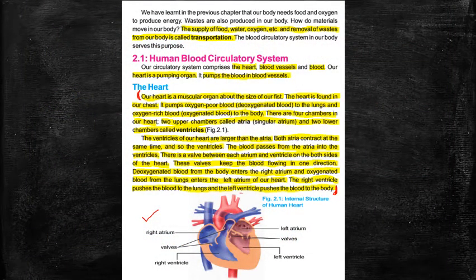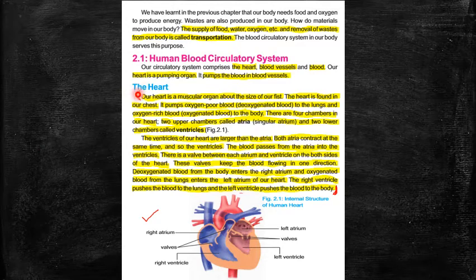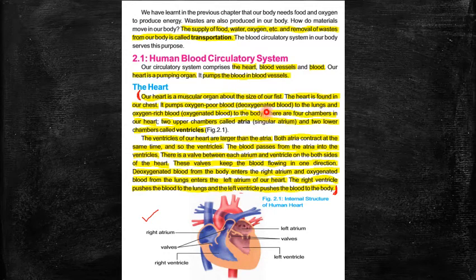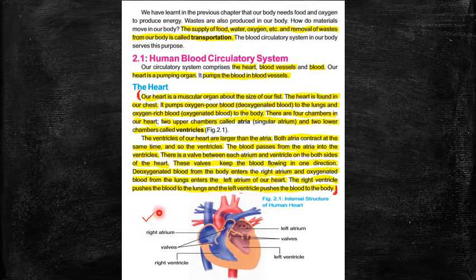Here are some highlight points, and your long question number one is now complete. Long question number one is: describe the structure of the human heart. You can give headings: first, size; second, location; then chambers of the heart. You must draw the diagram of the heart with labeling — you have to practice the diagram and learn all the labels.